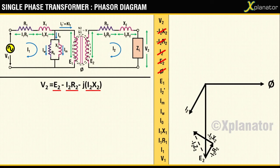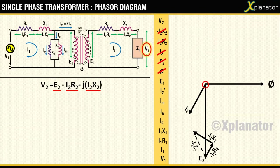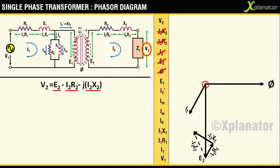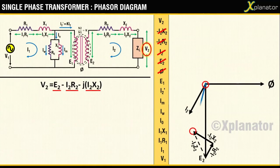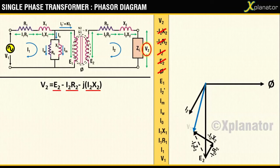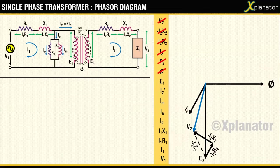You can add the three phasors to get the resultant vector V2. The first vector, that is E2, started at the origin, and the last vector, that is minus I2X2, has finished at this point. Join the start and the end points to get the resultant vector V2. The phasor diagram for the secondary circuit has now been drawn completely.